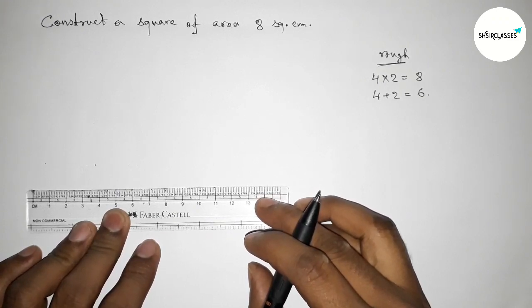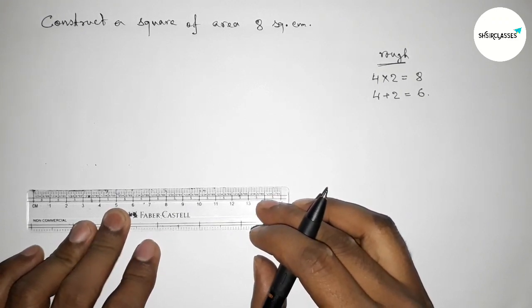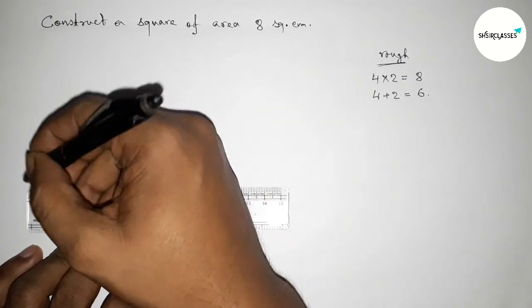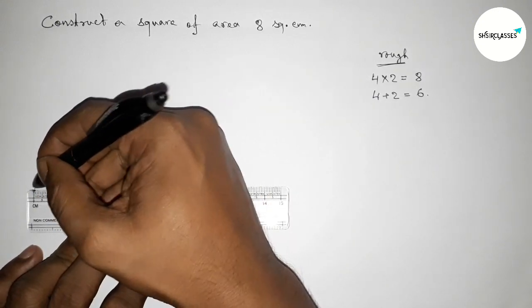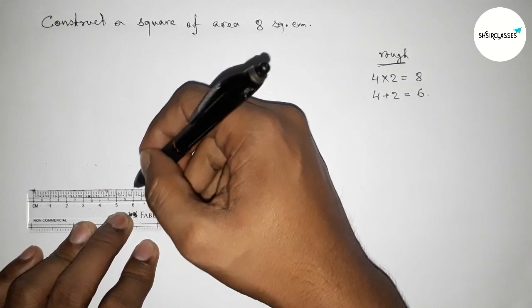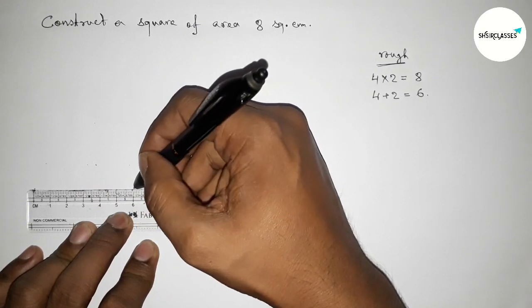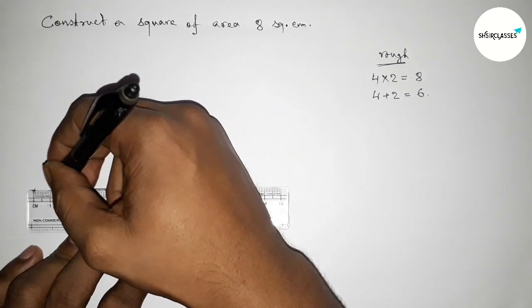I'm going to draw a line segment of length 6 centimeter first. Starting from 0: 1, 2, 3, 4, 5, 6. So this is a 6 centimeter line segment.